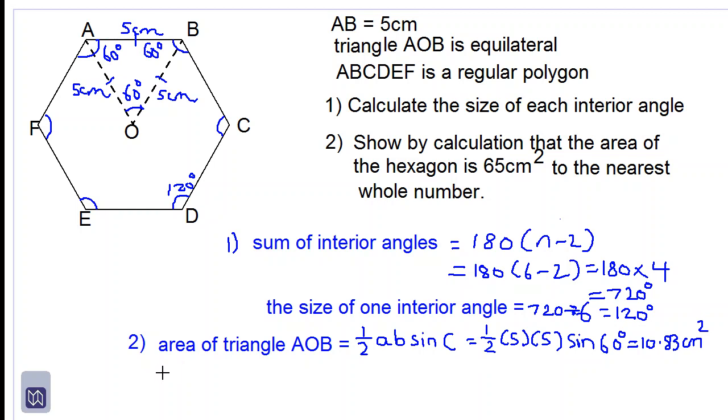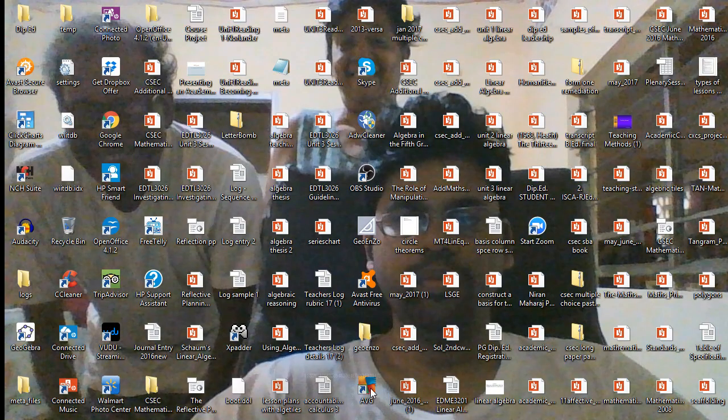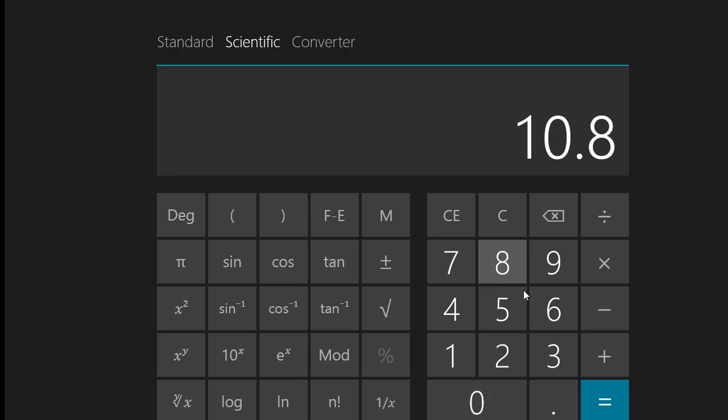And let's find the area of the polygon, the hexagon. So let's divide our hexagon into triangles of the same size. We see that we have six identical triangles each one of the same area, so the area of the hexagon will be 10.83 multiplied by 6. Let's go to our calculator again: 10.83 multiplied by 6 and we get 64.98.